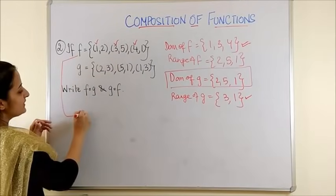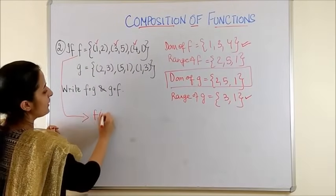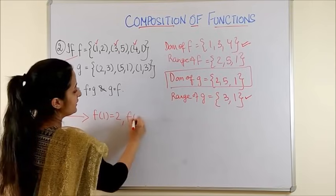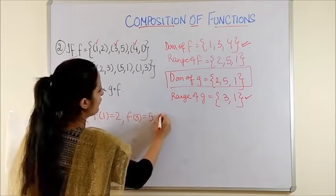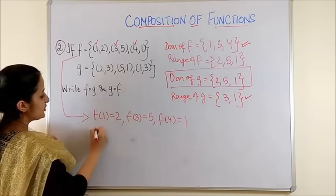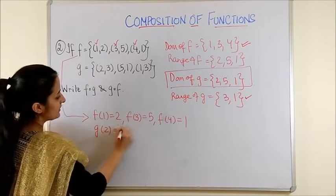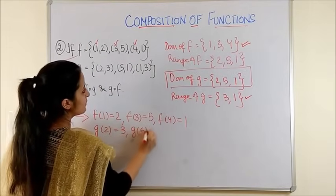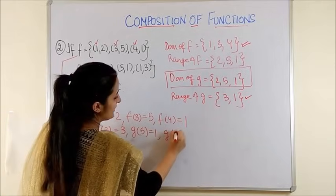Now, if we write this in the function form, this means F of 1 is 2, F of 3 is 5 and F of 4 is 1. Similarly, G of 2 is 3, G of 5 is 1 and G of 1 is 3.